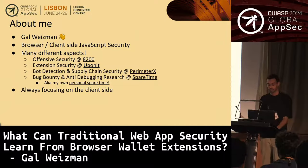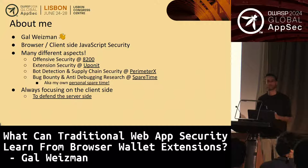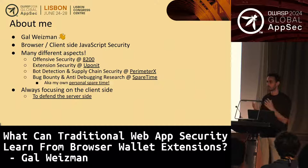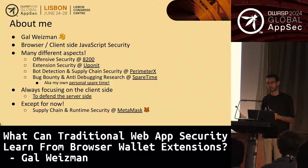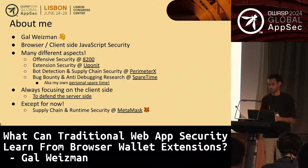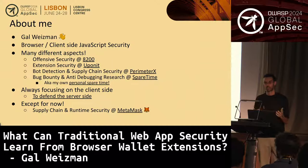I also did bug bounty and anti-debugging research in my spare time, managing to breach services like WhatsApp Web, Chromium, Snyk, and many others. What I'm trying to say is that I've always been focusing on the client side, but always from the perspective of securing the server side — because the server is the entity that has all the assets we truly want to defend. But now I have this unique job where, for the first time, I focus on securing the client side for the sake of the client. I work for MetaMask, a browser extension that acts as a crypto wallet and is a self-custodial wallet, meaning all secrets are stored in the browser. I do supply chain security, runtime security, and related aspects there.